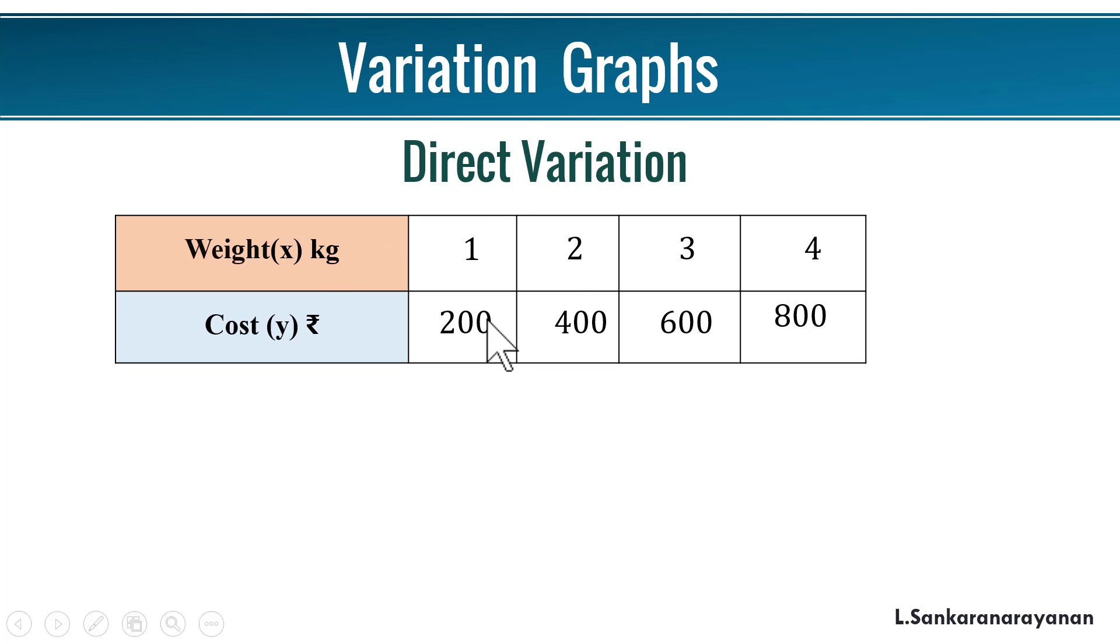Let us tabulate them: weight and cost. You see that here 1, 200, 2, 400, 3, 600, 4, 800. These are all weights and these are all costs. So here we can see that 200 by 1 is 200, 400 by 2 is 200, 600 by 3 is 200, 800 by 4 also 200. This is called proportion.